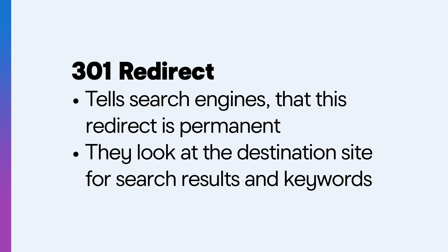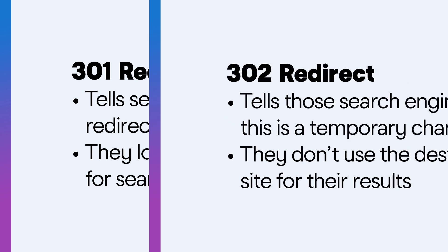What's the difference between a 301 and a 302 redirect? Well, 301 redirects tell search engines like Google and Bing that this redirect is permanent and they should look at the destination site for search results and keywords. 302 redirects tell those search engines that this is a temporary change, so they shouldn't use the destination site for their results. You might use this if you're prepping a new website for this domain but need to send your visitors to the old site temporarily.